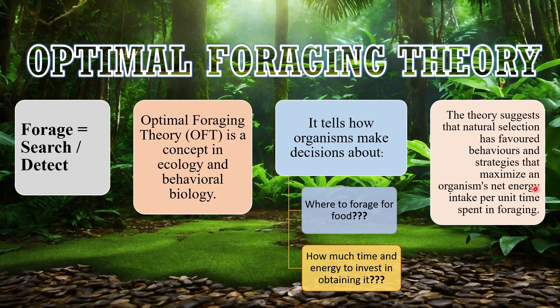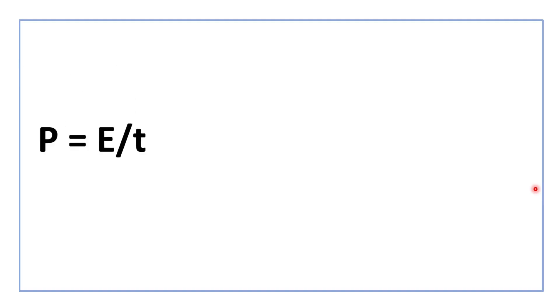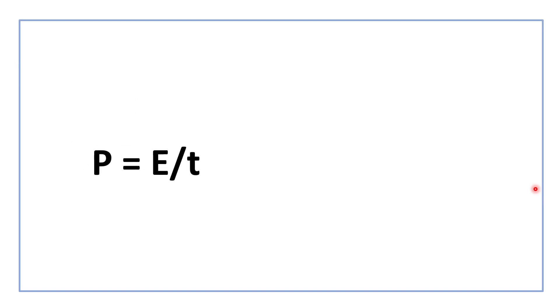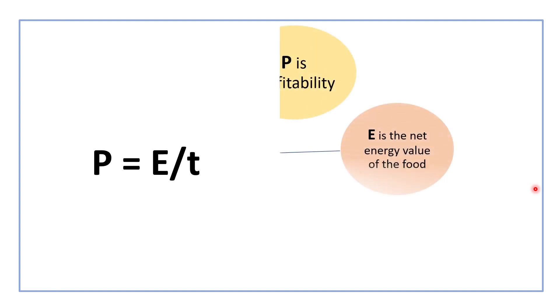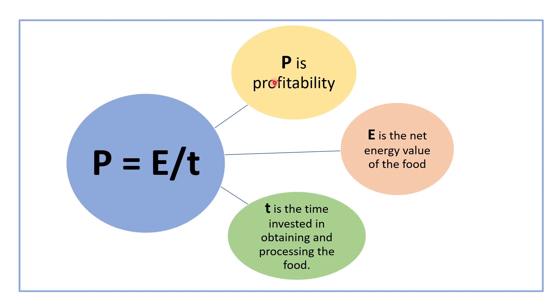The profitability of a food item can be expressed through a mathematical formula: P = E / T. P is the profitability, E is the net energy value of the food, and T is the time invested in obtaining and processing the food.